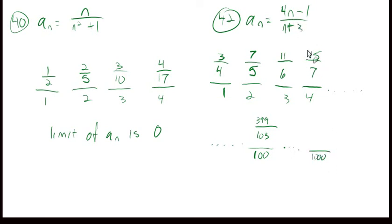And if we kept going and we went to 1,000, we'd have 4,000 minus 1, that'd be 3,999 over 1,000 plus 3, that's 1,003. That's even closer than this is to 4. Almost 4,000, just 1 away from 4,000, 3 away from 1,000. So it's really close to 4.